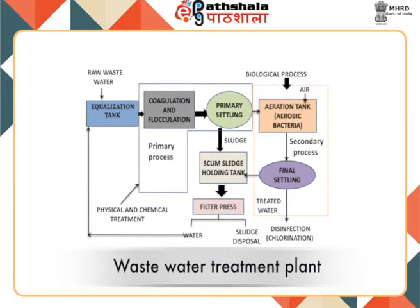Domestic and municipal wastewater should receive at least primary treatment — which involves physical removal and settling — and secondary treatment, which can be followed by disinfection before discharge. Sometimes the effluent from secondary treatment is not acceptable. Therefore, a third level of treatment, that is tertiary or advanced treatment, is used. The flow chart shown here represents a typical wastewater treatment plant involving primary process, secondary process, and disinfection.